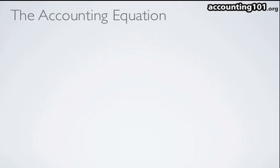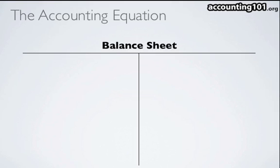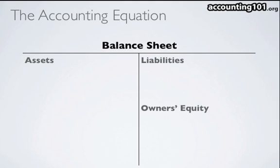On our balance sheet, on the left side you have assets, and on the right side of the balance sheet you have liabilities, and below that you have owner's equity.